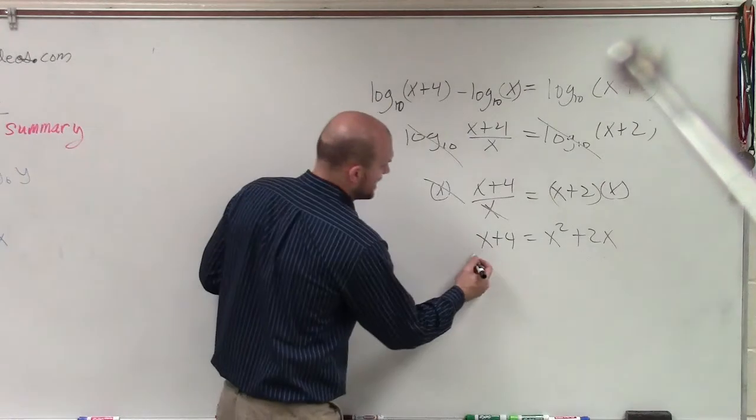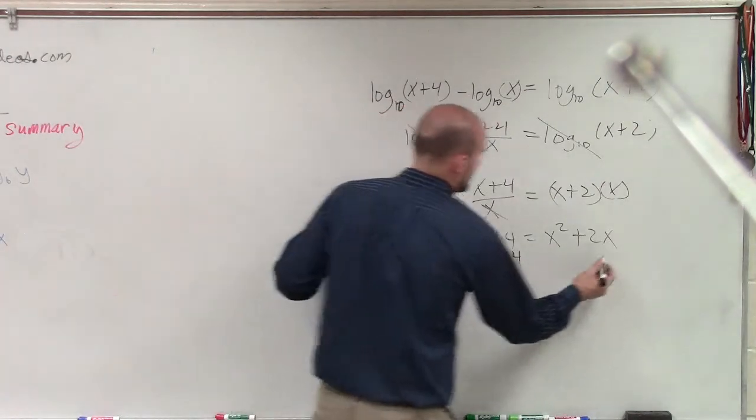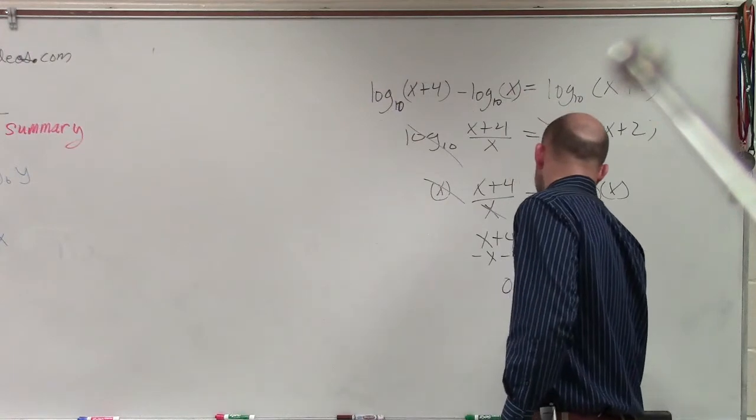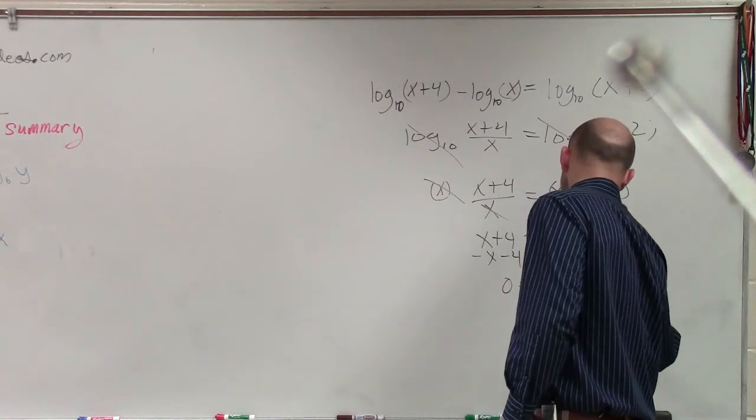Then I subtract the x and subtract the 4. So I have 0 equals x squared plus x minus 4.